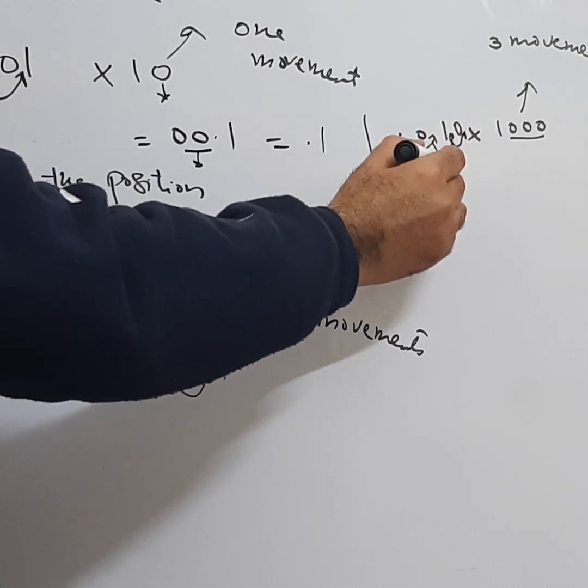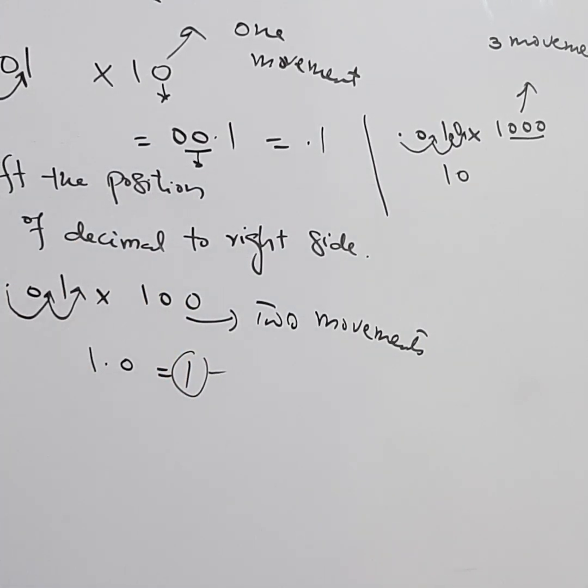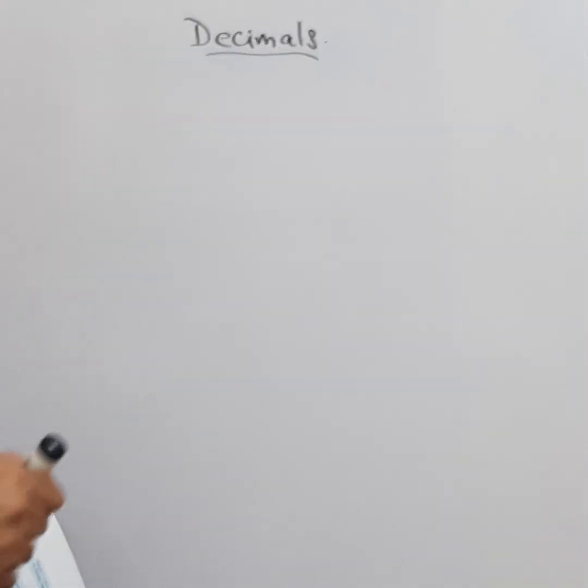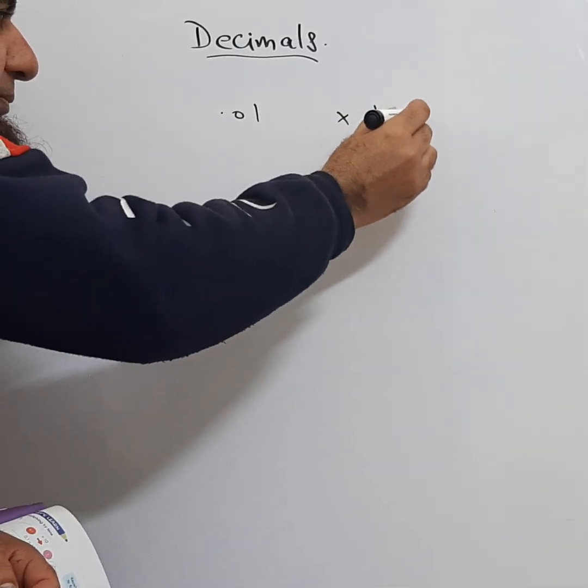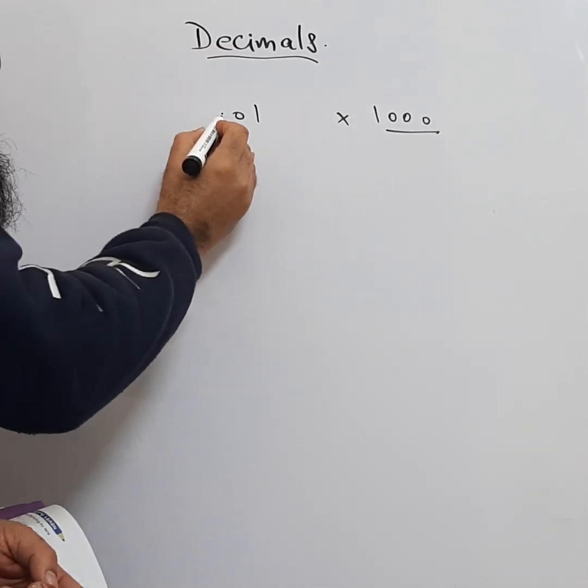I'll explain you again how to multiply with 1000. See, this is 0.01. If you multiply it with 1000, you need to give three jumps on the right side to the point.